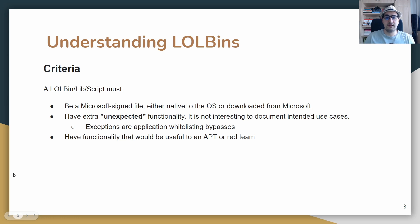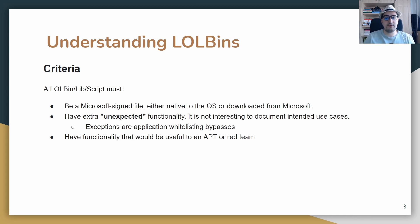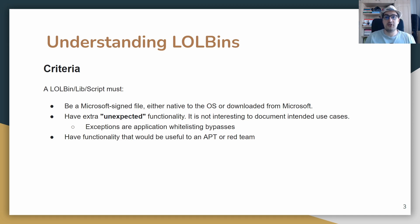If you check out the LOLBin GitHub webpage, you'll see that a LOLBin must be a Microsoft-signed file, either native to the OS or downloaded from Microsoft, and must have extra unexpected functionality not documented for intended use cases. For example, certutil.exe — attackers can use certutil.exe to download, encode, and decode code or files. It also has functionality that would be useful to an APT or red team.